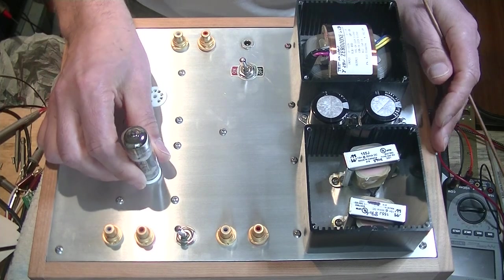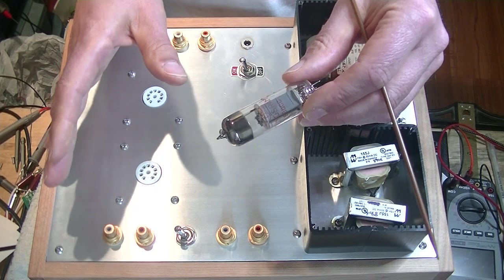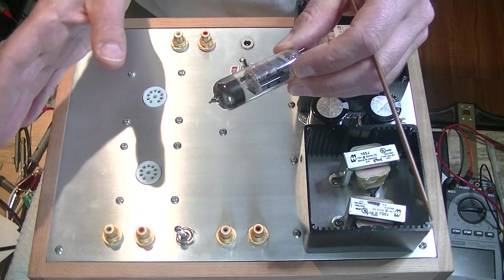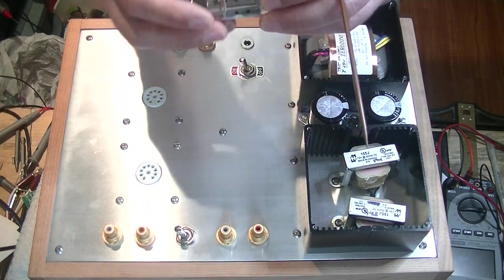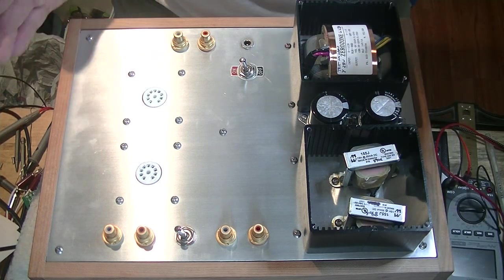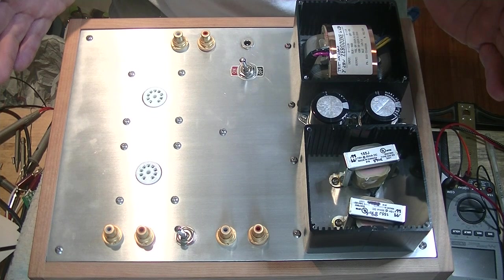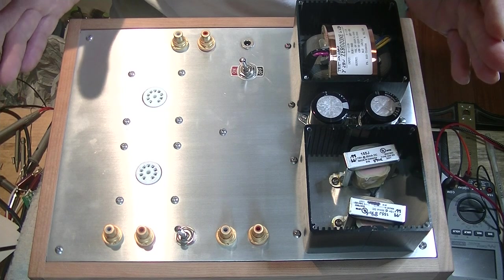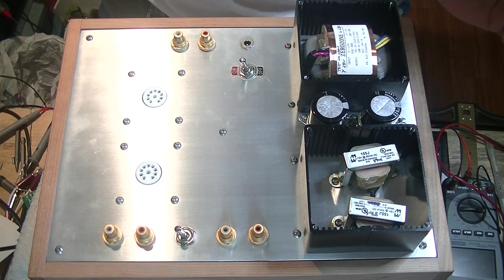Philips, who developed the E80CC way back in 1952, makes the gold standard. They make something called the SQ Special Quality, or they made. They're no longer available new. Gold pins. And they cost easily twice as much, three times as much as the TungSrams. And they're just not that easy to find. I have some, and I've listened to them both. And frankly, I would say that the edge definitely goes to the Philips tubes. But some people actually prefer the TungSram, because they're a smoother sounding tube. Whereas the Philips tube is a little more analytical, a little bit more detailed. They're very close, though, to each other.